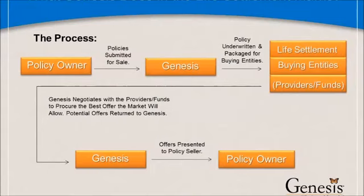That creates arbitrage in the market and creates value within the secondary market. The process generally is very simple: a policy owner will submit a policy for sale to our firm, will go through an underwriting process. Once that process is complete, the packaged policy will be presented to multiple buying sources, otherwise known as providers.